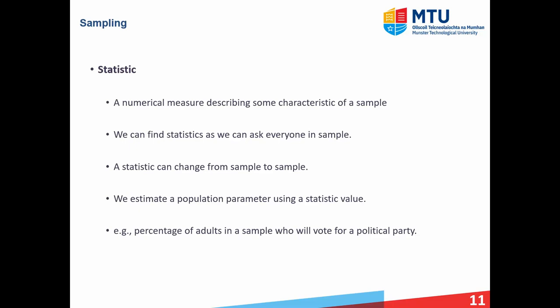In contrast, a statistic has to do with a sample — S for statistic and sample. It's a numerical measure describing some characteristic of a sample, such as sample mean or sample proportion. The big difference between a statistic and a parameter is that with a parameter we will in theory never know it, whereas with a statistic we do know it because we're dealing with a smaller quantity of units. We can monitor or record that characteristic for each unit and work out the corresponding statistic. A statistic does change from sample to sample because you have a different set of units, and ultimately the statistic is used to estimate what the population parameter is — that's the basis of statistical inference and hypothesis tests and confidence intervals.